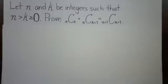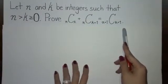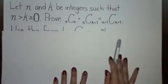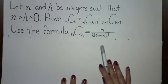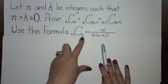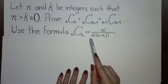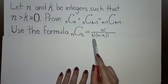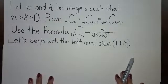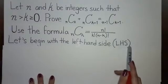To prove that the left-hand side equals the right-hand side, we're going to have to prove first the left-hand side and then the right-hand side. So let's start with the left-hand side. We want to use the formula: n combination k is equal to n factorial divided by k factorial times n minus k factorial.